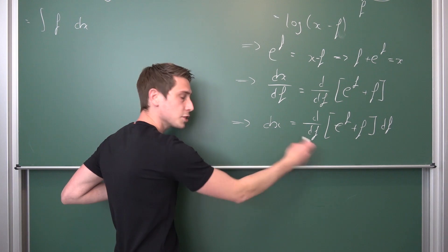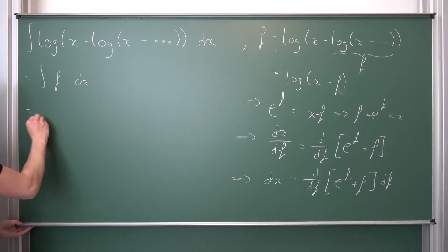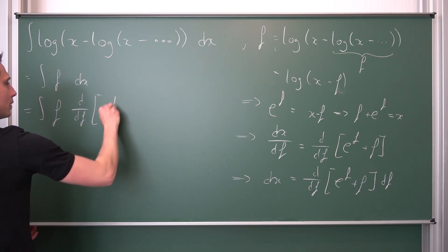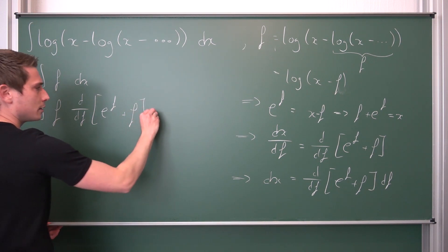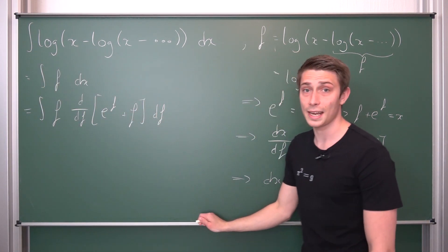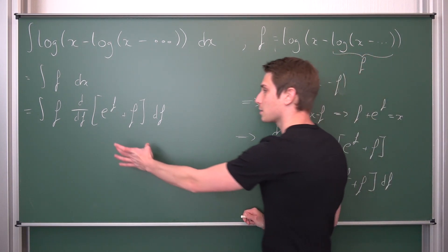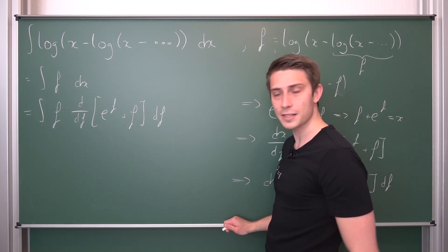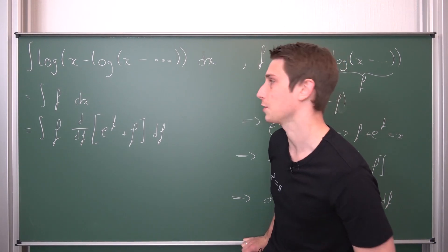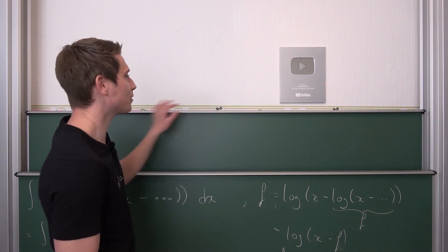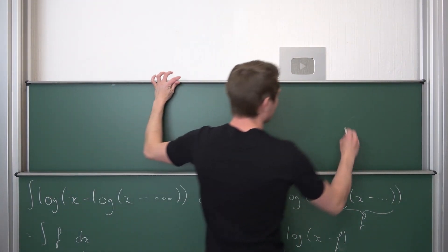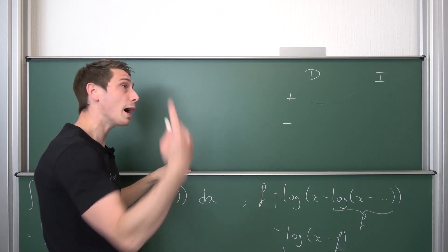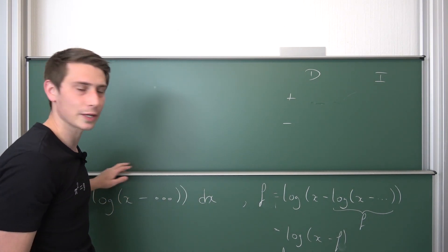Let us plug in the new definition for dx. We get the integral of f times d/df(e^f + f) df. Why didn't I differentiate this thing right here? Because we are going to do integration by parts, and if you're a smart boy you'll see this is way easier to handle. We're going to differentiate something and integrate something. Place your bets now: what are we going to differentiate and what are we going to integrate?